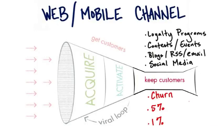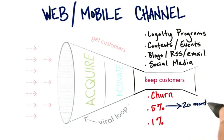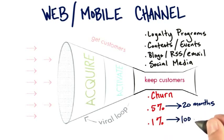Just think about it. With 5% attrition, your average customer sticks around for about 20 months, but with 1% attrition they stick around for 100 months. You get five times more revenue from the same customers by just working on keeping these customers around.